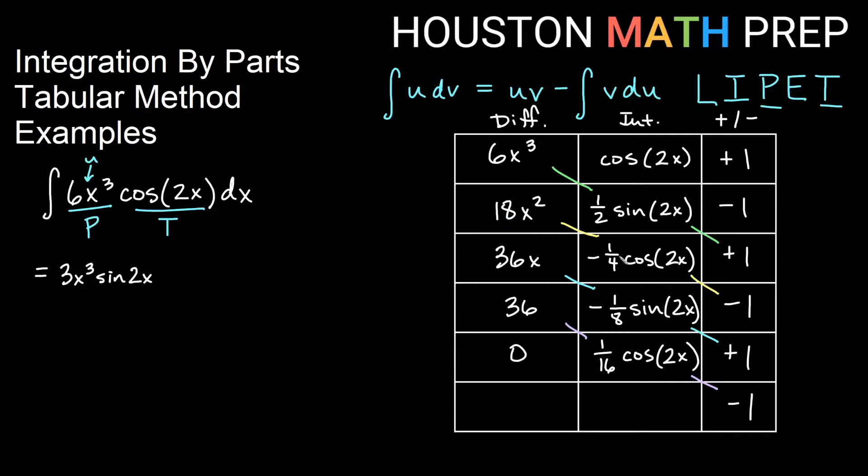And then I have 18 times one-fourth. 18 over 4, if I reduce that, that would be 9 over 2. So I'm going to say plus 9 halves x² cosine 2x.